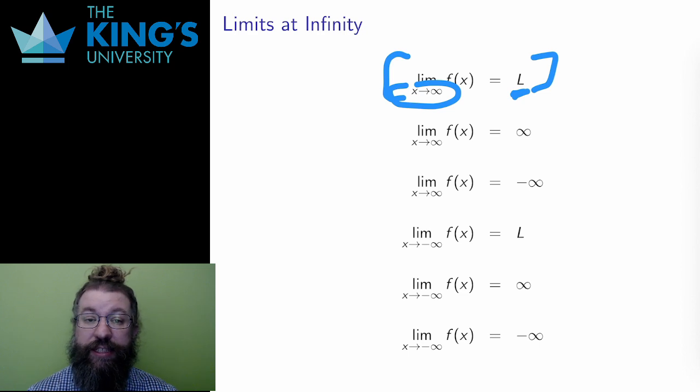The second statement says, as x gets larger and larger without bound, the output also gets larger and larger without bound. And the third says the same, but the output is negative.